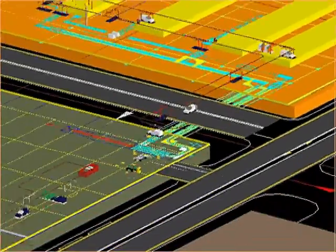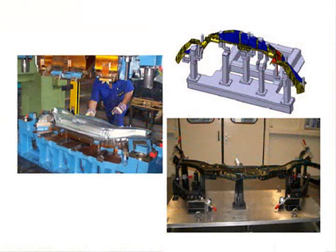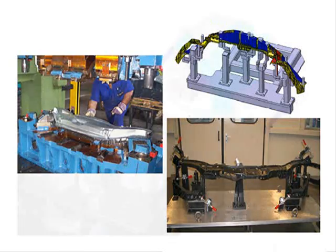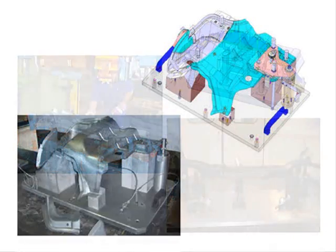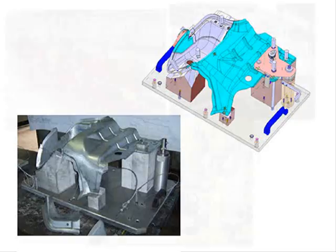Junto con el diseño del proceso, se diseñan y fabrican los utillajes y calibres de control de producto necesarios para la inspección y verificación durante o al final del proceso, así como de los sistemas de control de parámetros del mismo. La implementación de poka-yokes, o sea antierrores, se realiza allí donde es posible.